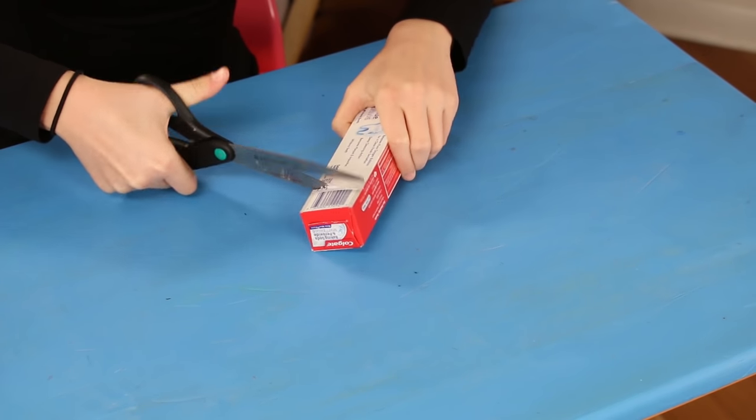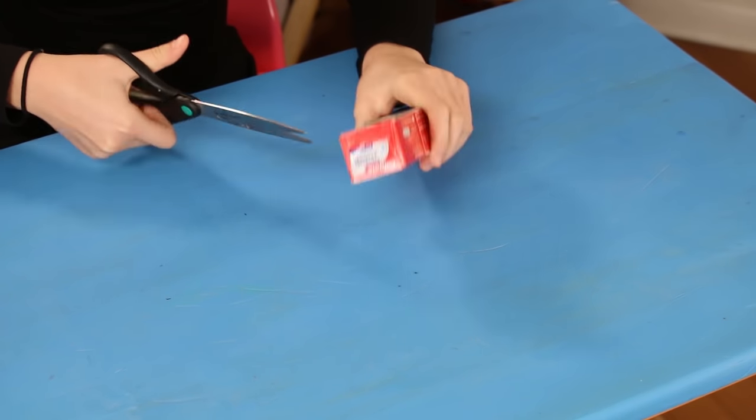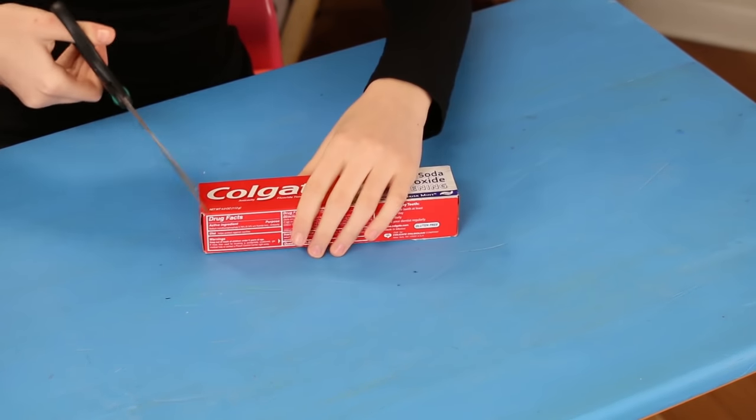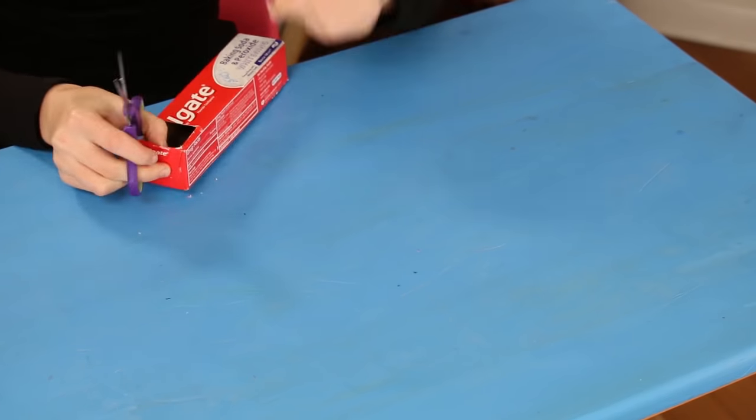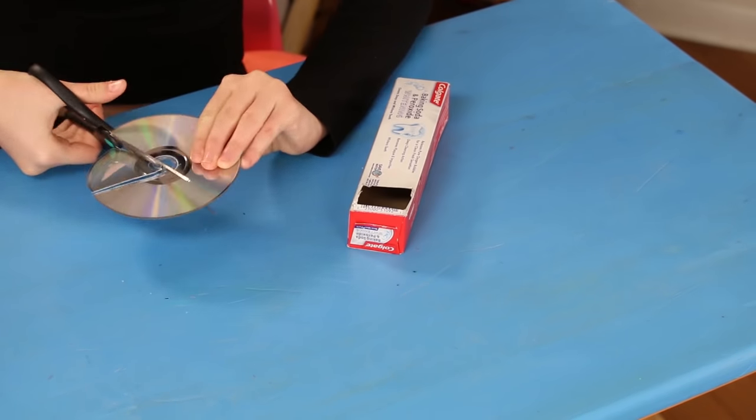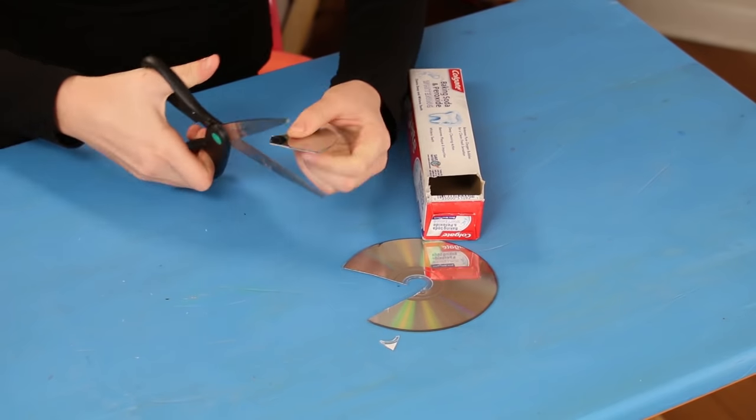Cut a square on one side of the box near one end. Now cut a second square on the other side of the box near the opposite end. Now cut two pieces of the CD. Get an adult's help.